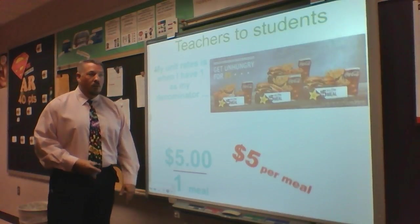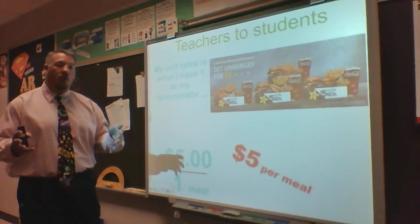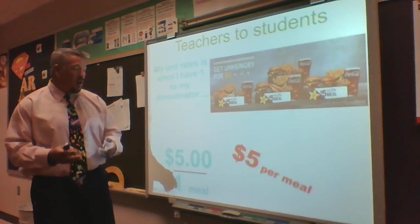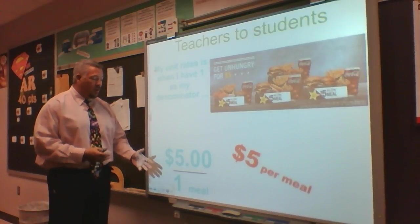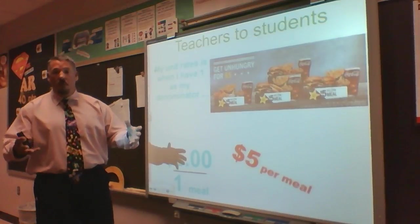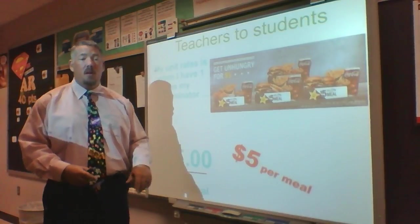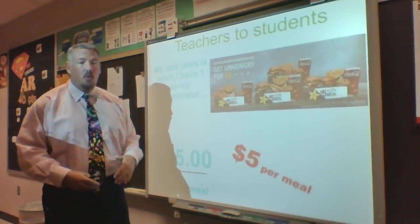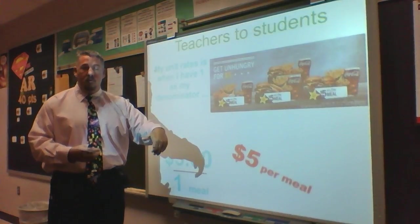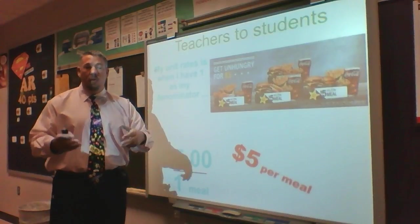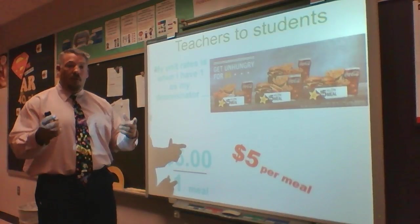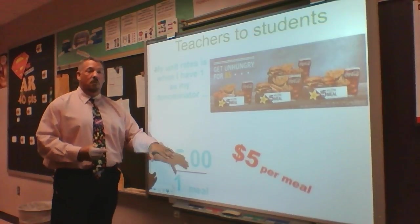How about Hardee's? Hardee's has a deal where you can get a whole meal for $5. If I talk about a unit rate, that's $5 per meal — one meal is $5. If you have three people in your family and each gets a meal, you'd be spending $15 total. $15 for three meals would be my rate, and when I reduce it, I know I'm spending $5 per meal — that's my unit rate.